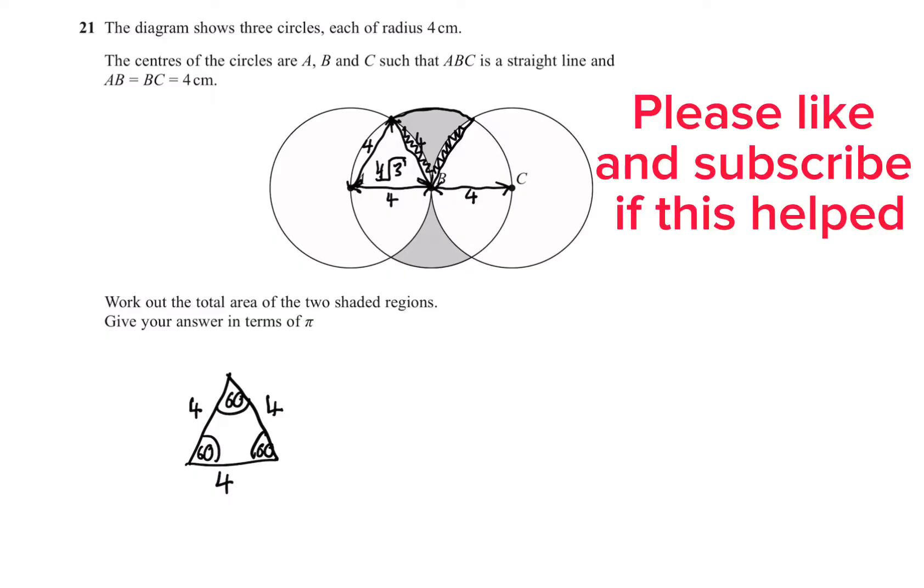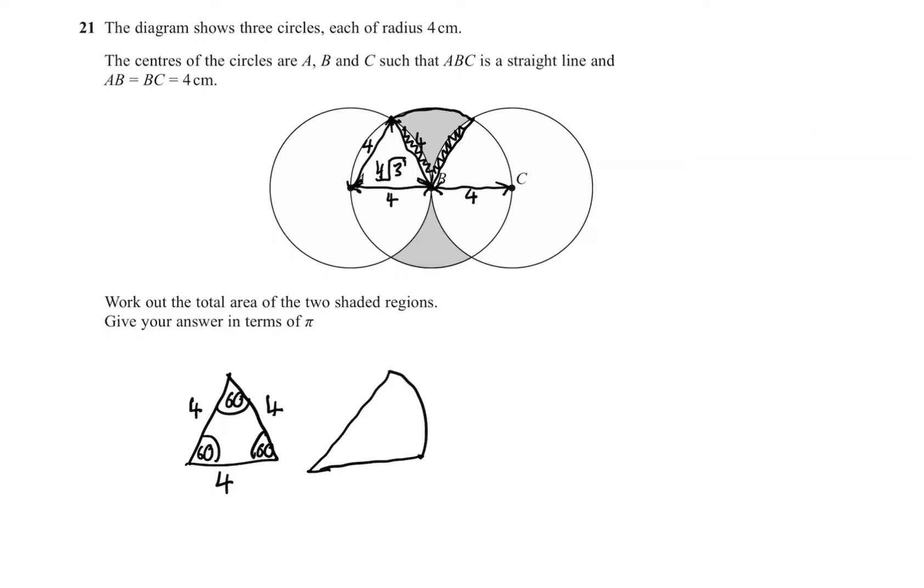Now, to find the area of that shaded segment, let's imagine we have this. What we have just found is this area. So to get the shaded segment on its own, we can find the area of the total sector and subtract it from this area to give us just that area. So we're going to find, we're now going to find the area of the sector.